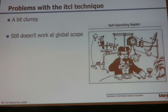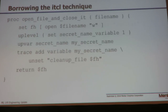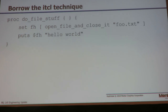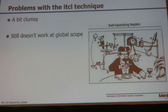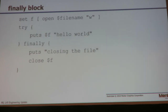If you try to call this from global scope, again the trace doesn't fire. It has to be called from inside a proc. The key is that when the secret variable gets unset, the trace calls and it gets cleaned up. It's a little clumsy and it doesn't work at the global scope.